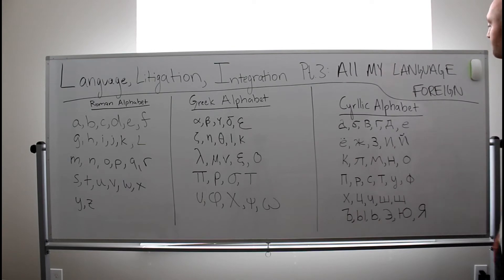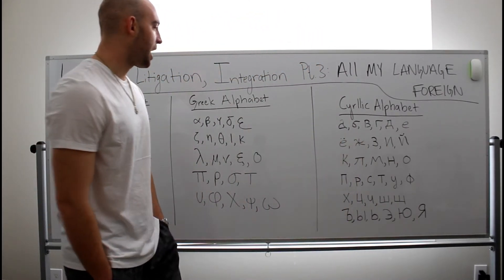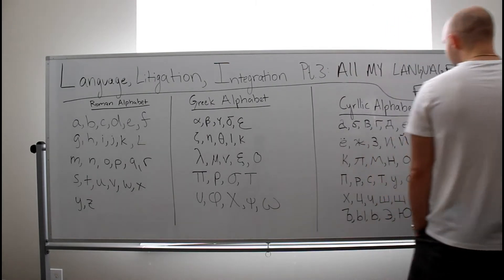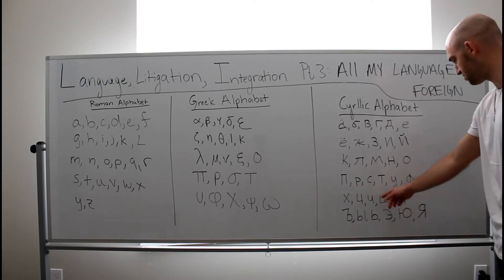Now, if we pop over here to the Cyrillic alphabet, we have A, V, B, G, D, Y, Y, Y, G, Z, I, K, L, M, N, O, P, R, C, T. I don't know what, I don't know, F, C, T. Something like that for those three, I don't know.